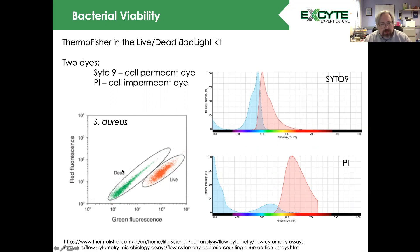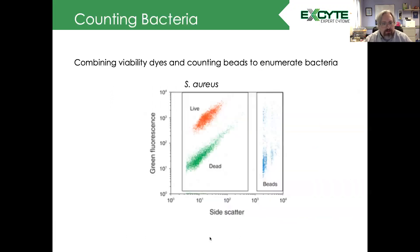Another thing we can do with this assay is count the bacteria by using a bead. Here we are looking at just green fluorescence. Our dead cells have low green fluorescence, our live cells have high. With a bead, we can actually calculate the number of live cells in our culture.